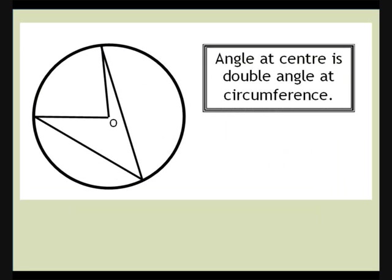Our next theorem is the one most people remember. The angle at the centre of the circle is double the angle at the circumference. Here it looks like an arrowhead, but this theorem can come in many disguises.